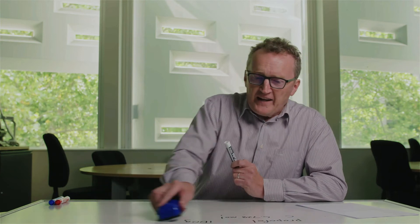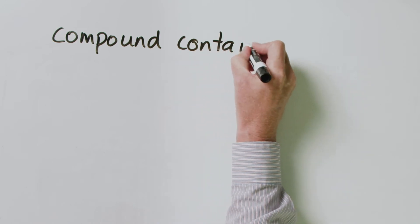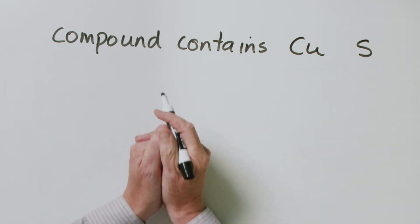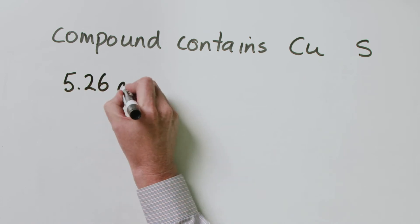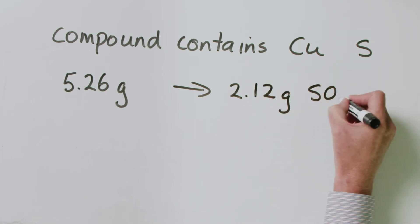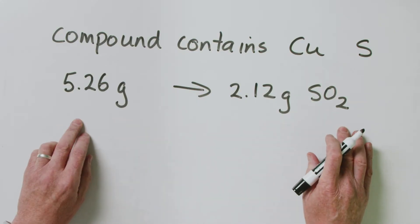So let's have a look at another type of problem. We have a compound which contains only copper and sulfur, and we want to know its empirical formula. Again, we take this compound whose formula we don't know and combust it in oxygen. When we analyze what happens, we find that if we take 5.26 grams of this compound, we get 2.12 grams of SO2 when we burn the whole thing in oxygen. So what's the empirical formula of our compound given these data?